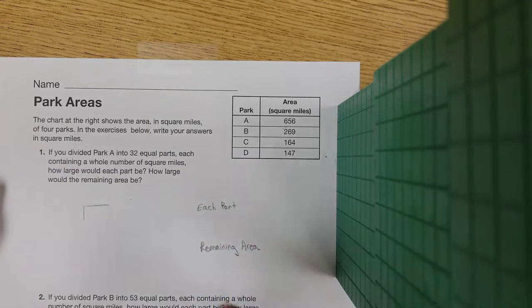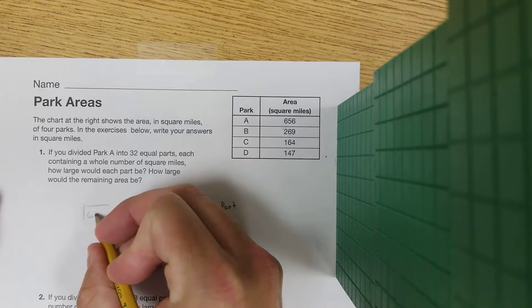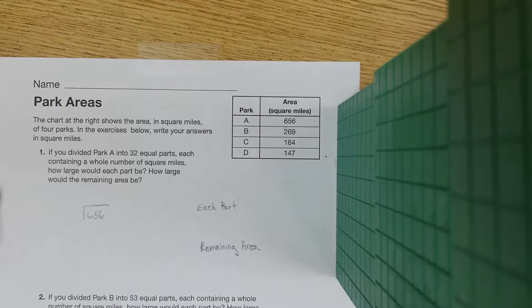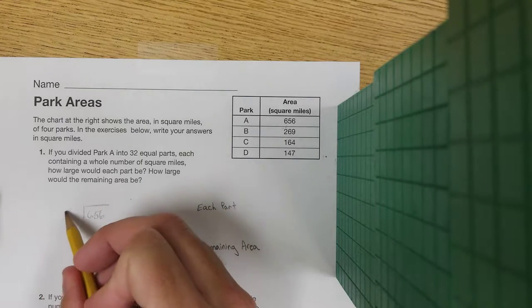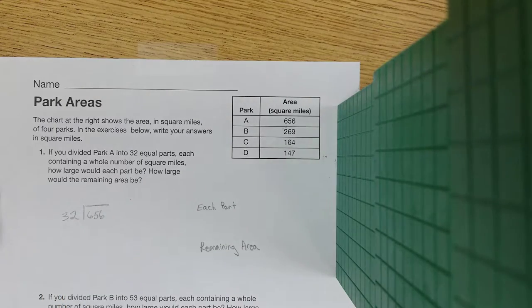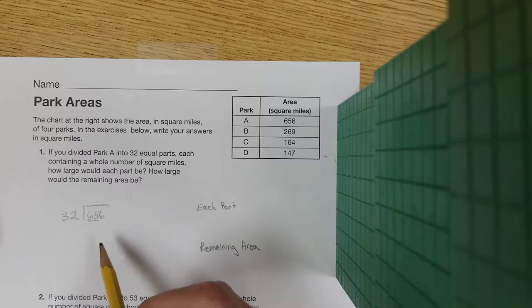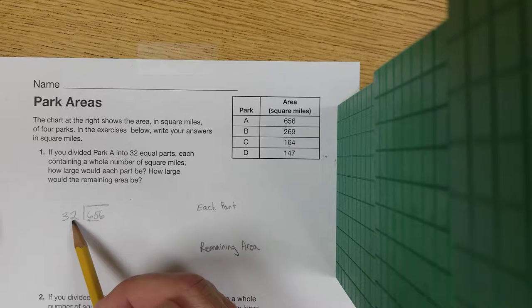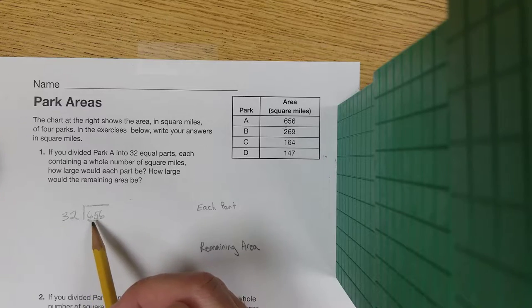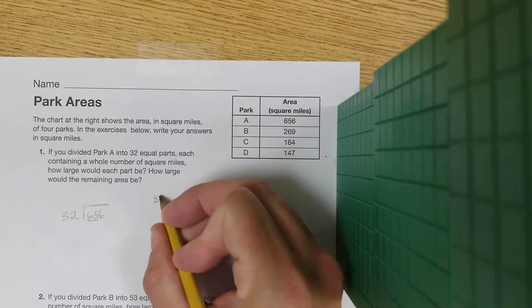So we're going to start with our 656, that's our big piece, and we're cutting it into 32 smaller pieces. We've got to see how many times 32 goes into 656. 32 will not go into 6, but it will go into 65. If I count by 30s, 30, 60, I'm guessing it's going to be 2.